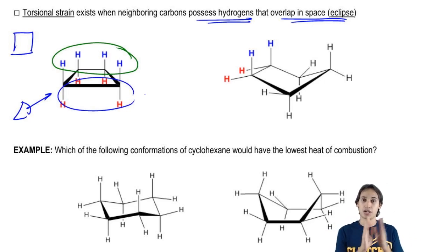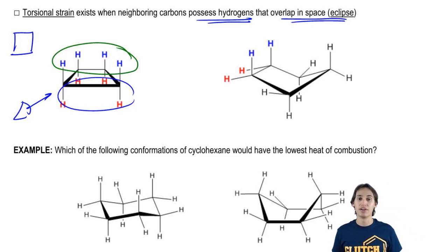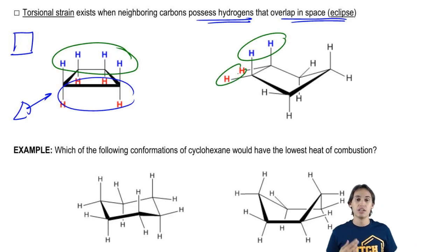Now you can see that cyclopentane is a little bit better, but it still has some eclipsed bonds. Here and here it has some eclipsed bonds. Usually cyclopentane will kind of move out of the plane, like it will bend a little bit so that it won't have so many eclipsed bonds.